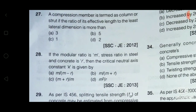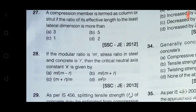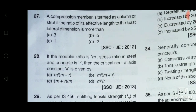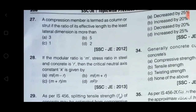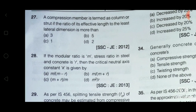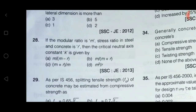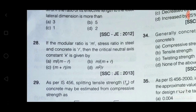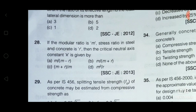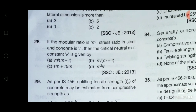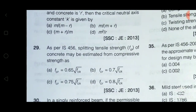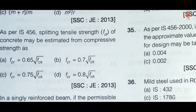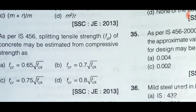Next question: A compression member is termed as column or strut if the ratio of its effective length to the least lateral dimension is more than — option A: 3, option B: 5, option C: 1, option D: 2. The correct answer is option A: 3. Next question: If the modular ratio is m and stress ratio in steel and concrete is r, then the critical neutral axis constant k is given by — option B is correct: m divided by (m + r). Next question: As per IS 456, splitting tensile strength of concrete may be estimated as — option B is correct: 0.7 × √fck.